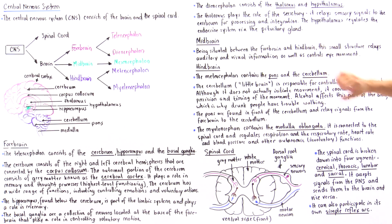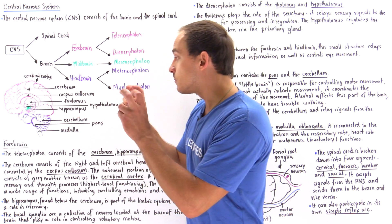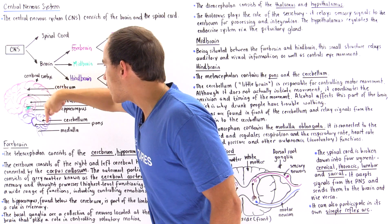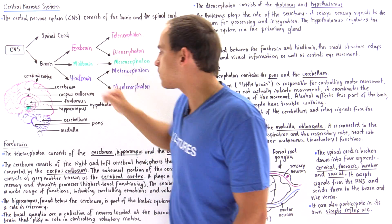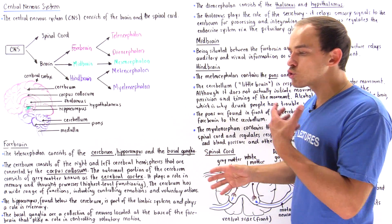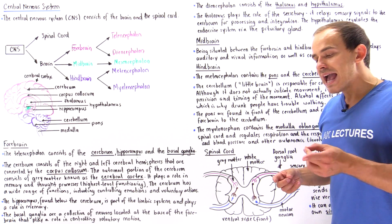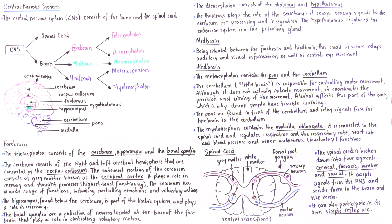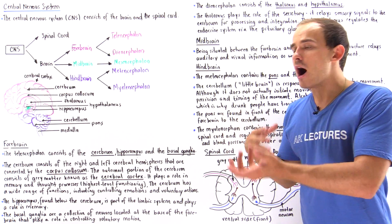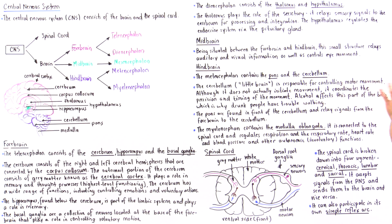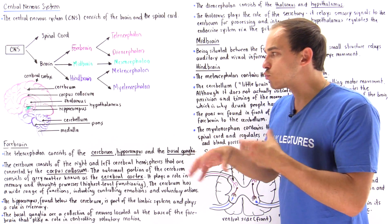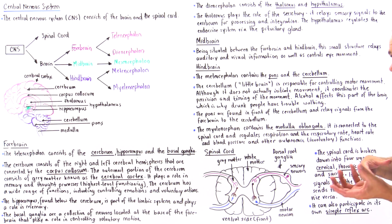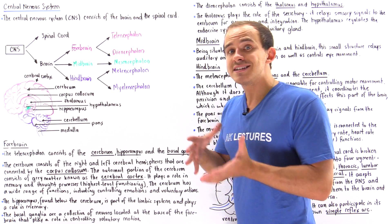The cerebellum, because it looks like a little brain, is sometimes called the little brain. It has the same inflections on its surface as the cerebrum. The cerebellum's function is to control and coordinate the movement of our muscles. Although it cannot initiate muscle movement, it coordinates the movement and precision timing of voluntary motions. Alcohol affects the cerebellum, which is why drinking too much causes stumbling and poor coordination.